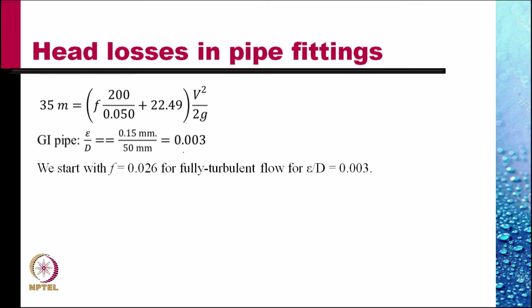Since d is given and epsilon by d can be calculated, we look up the value of f for the fully developed turbulent flow. For the fully developed turbulent flow in pipes with epsilon by d the relative roughness of 0.003 we obtain f as 0.026.